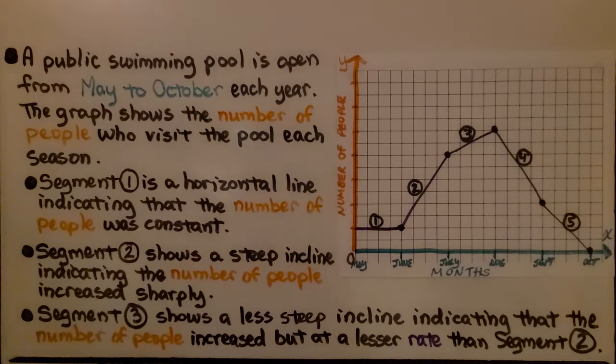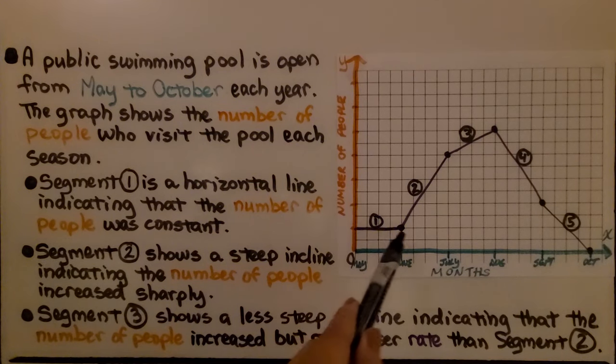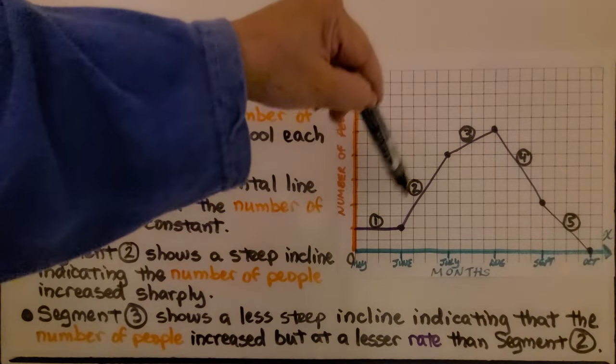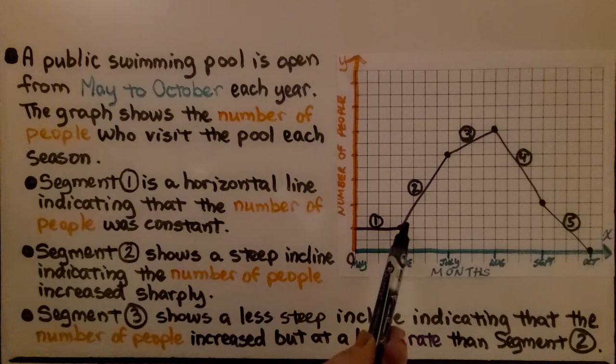Segment 1 is a horizontal line indicating that the number of people was constant. Segment 2 shows a steep incline indicating that the number of people increased sharply. And Segment 3 shows a less steep incline, it's not as steep as 2, indicating that the number of people increased but at a lesser rate than Segment 2.